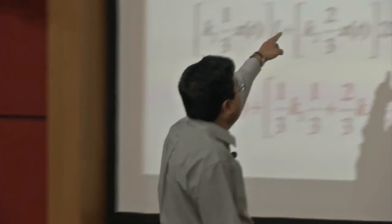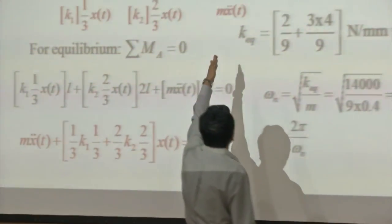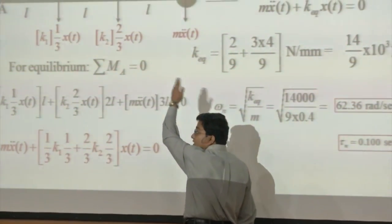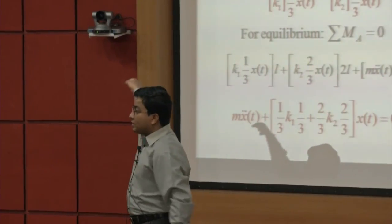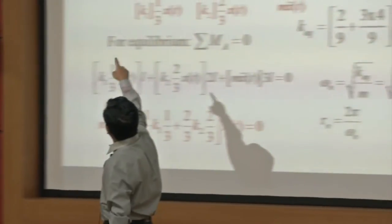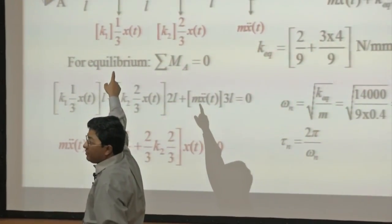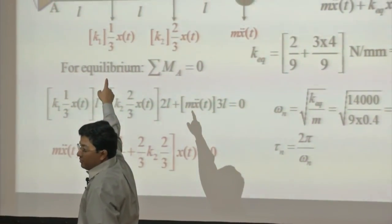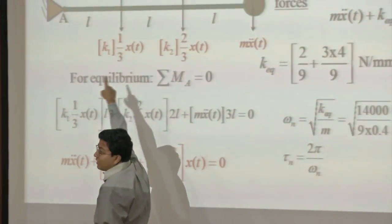D'Alembert's principle is being used because we are using the inertia force which opposes the motion. The bar is massless in this case, so there is no I·alpha coming into play.